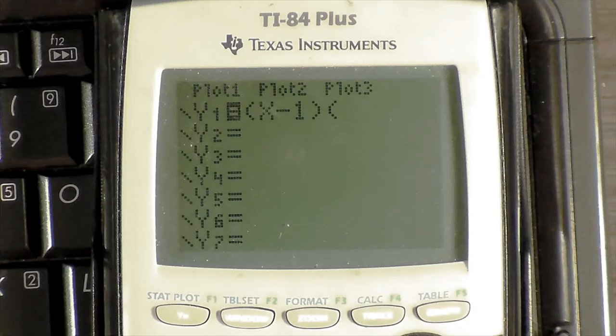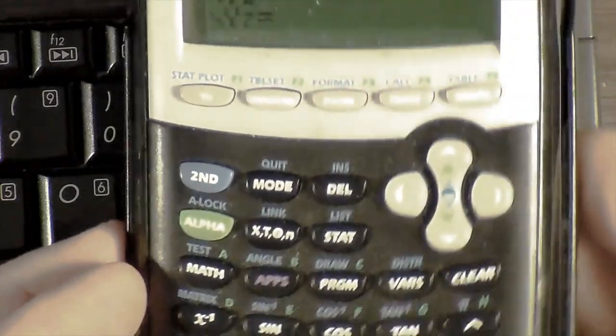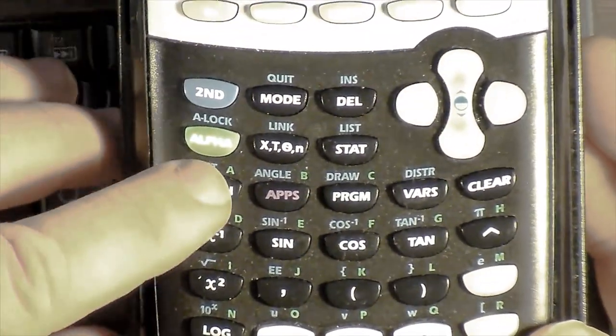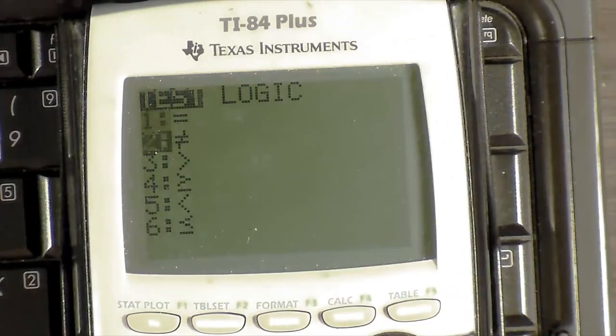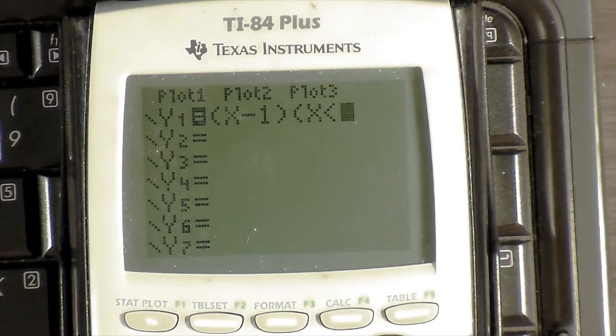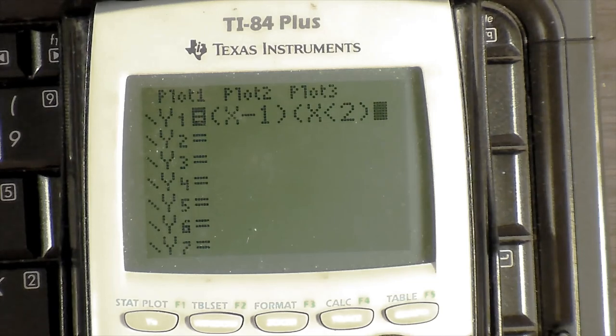This is where we have X-1, as we saw on the title screen, where X is occupying some domain less than 2. So I'm just going to go to option 5 for my boolean variables and I can do X is less than 2, and I close my bracket.